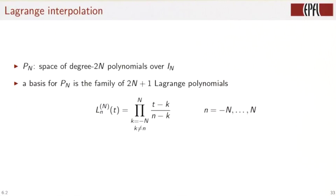The natural solution to this interpolation problem is given by Lagrange interpolation. Take pn, the space of degree 2n polynomials over the interval in. A basis for pn is the family of 2n plus 1 Lagrange polynomials given by this formula.